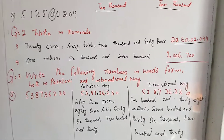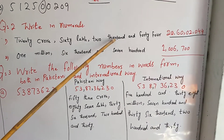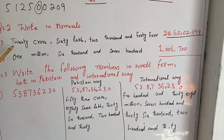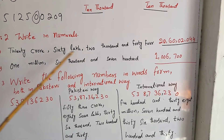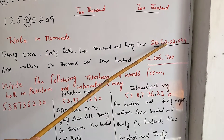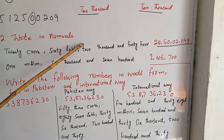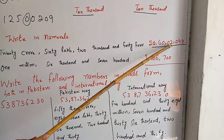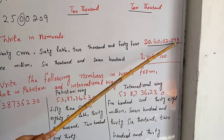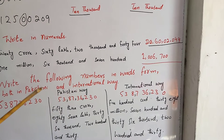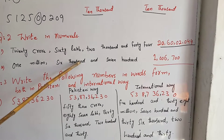Now question number 2: Write in numerals. We have to write this in numerals — that is, in number form. For example: 20 crore 60,00,2044. So 20 crore, then comma, then 60,000 comma. Now here the value at 10,000 is 0, so we write 2, comma. The value at 100 is again 0, and then ones value is 44. Then: 1,000; 60,000; 6,000 and 700.